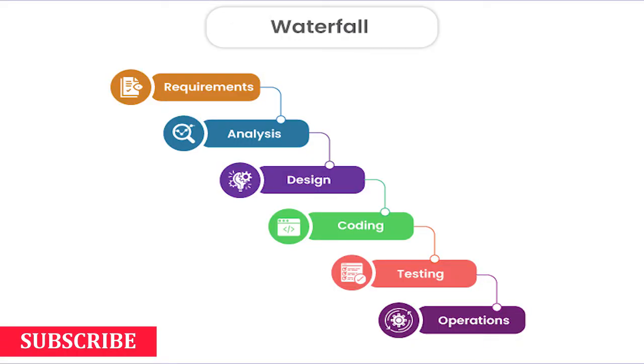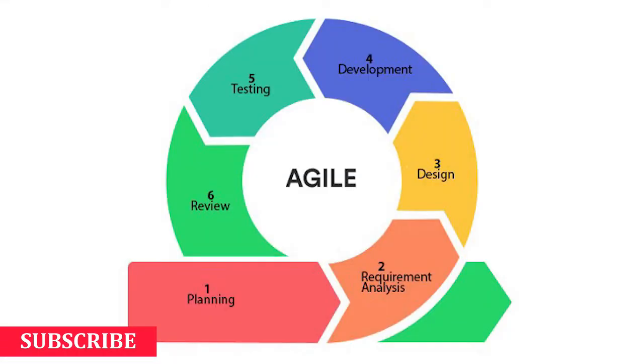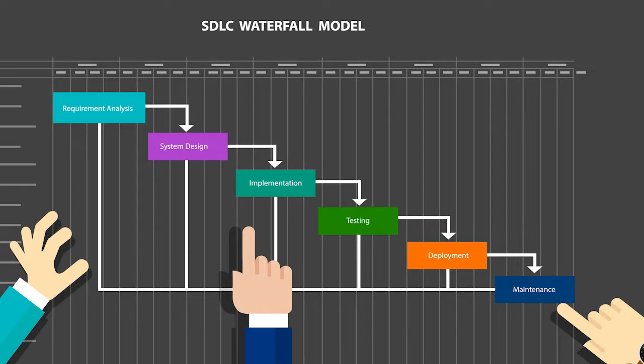Developers initially worked with the waterfall model. The waterfall model approach was the first SDLC model to be widely used in software engineering. It ensures project success by dividing the entire software development process into separated phases: the first is requirements, the second is design, the third is development, the fourth is testing, then deployment, and finally maintenance.